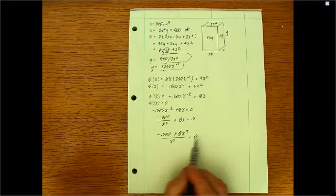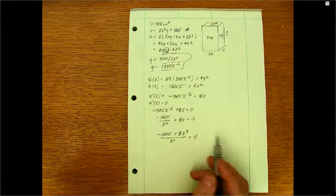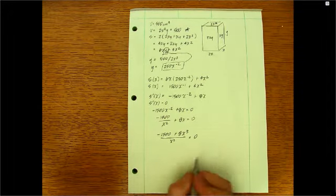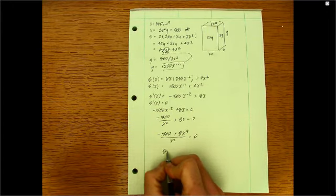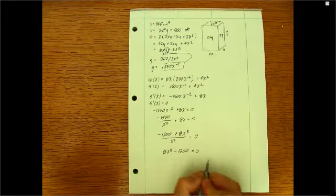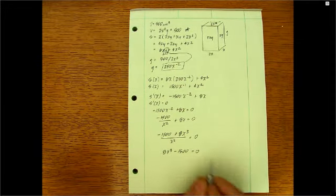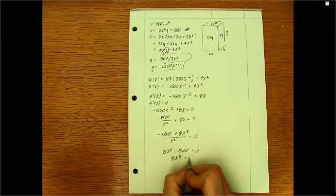Okay, so if that's equal to 0, then kind of think about this as a ratio. The only way a ratio can be equal to 0 is if its numerator is equal to 0. So that means that 8X to the third minus 1500 must be equal to 0. Well, that's a simple equation to solve. 8X to the third equals 1500.